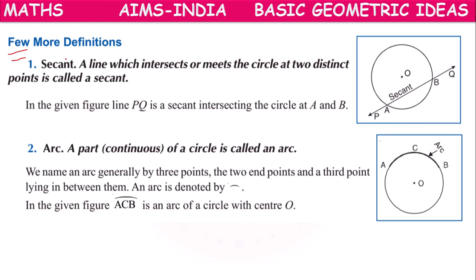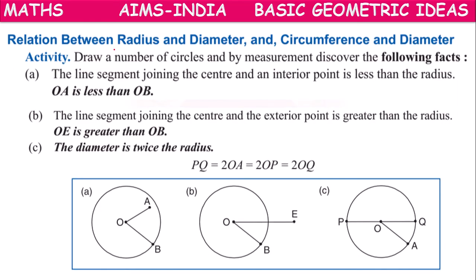Now a few more definitions. Circumference means the total length starting from point P, taking one complete round and coming back to P. That is called circumference, and C equals 2πR.